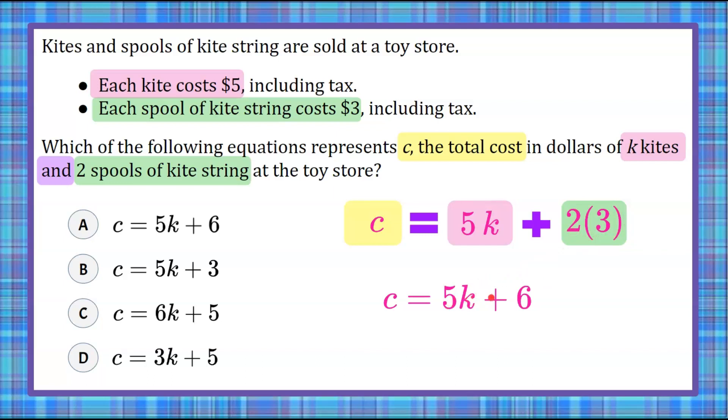five times that number, add six for our spools of string, would equal our total cost. Now we can see that that is answer choice A. C equals 5k plus six. And there you have it.